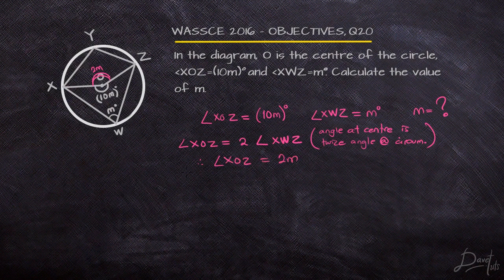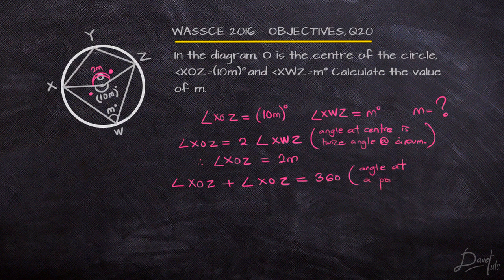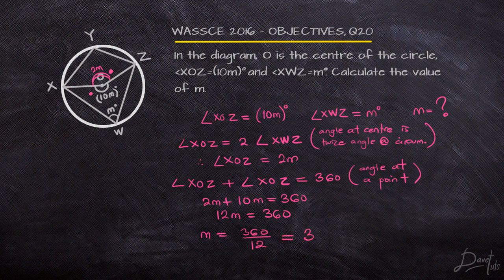Having that understanding helps us forge ahead in the solution. We also know that angles at a point sum up to 360 degrees. So angle XOZ facing up and angle XOZ facing down are going to sum to 360 degrees. That means 2M and 10M together equal 360 degrees, and solving for M gives us M equal to 30 degrees. And that question is done and dusted.